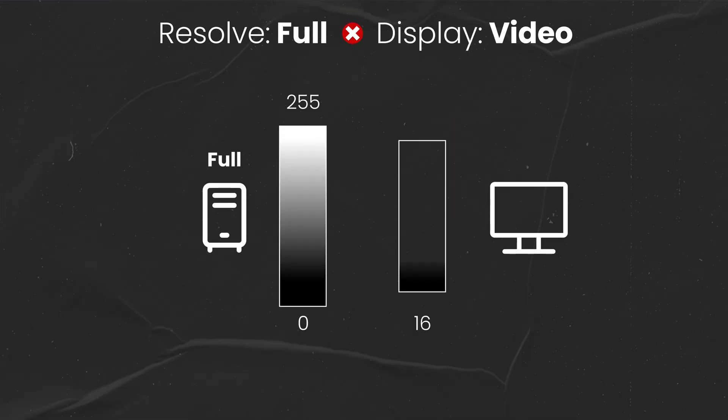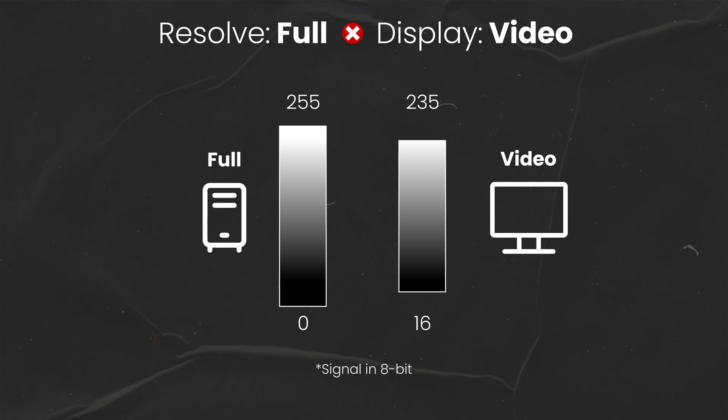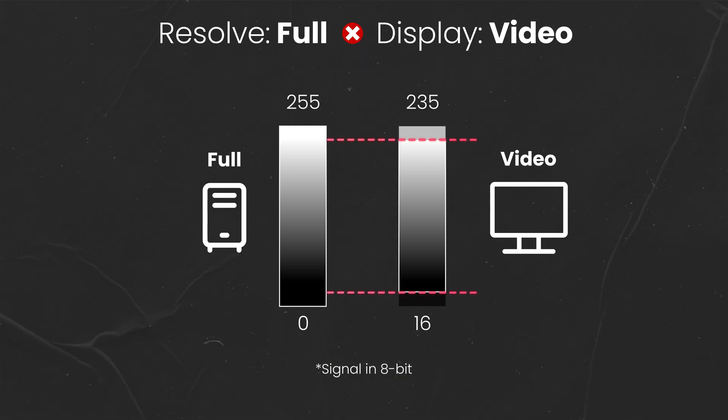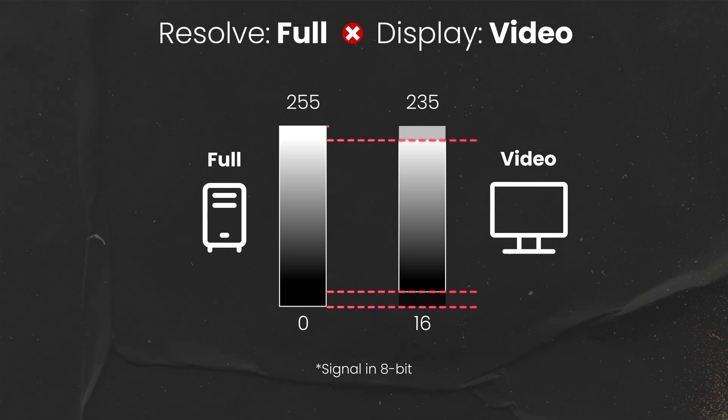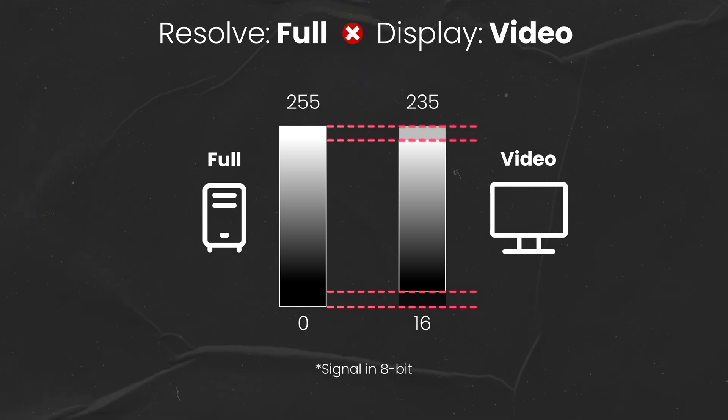But if this is not the case for you, here's how you can find out there is a mismatch. If the data levels you're sending out from Resolve are full but your reference display is set to Video Levels, your display incorrectly maps the black and white levels and the overall contrast. The values between 0 to 16 — the blacks — and those between 235 and 255 — the whites — get clipped. The visual result on the calibration image is much more contrasty, the grey background fully blends in with the black patch, and all the faded colour variations are now completely gone.